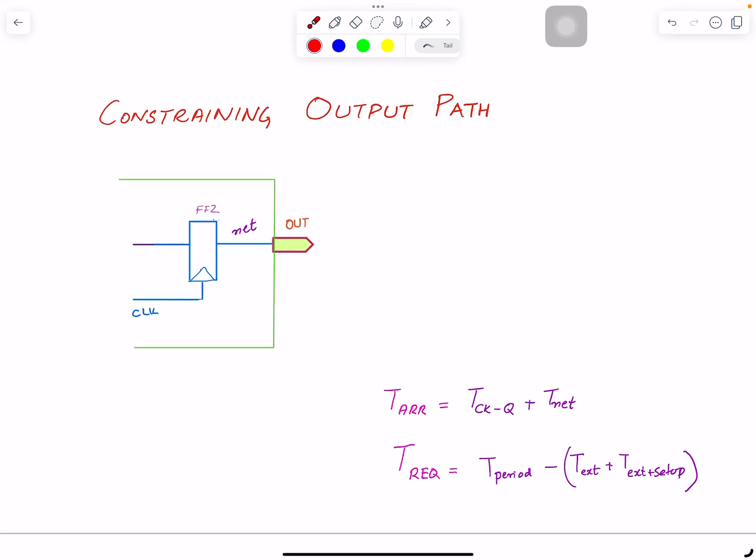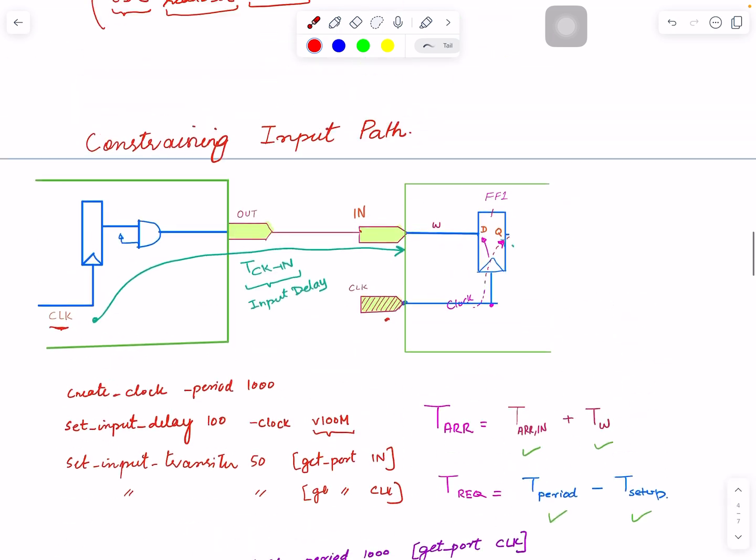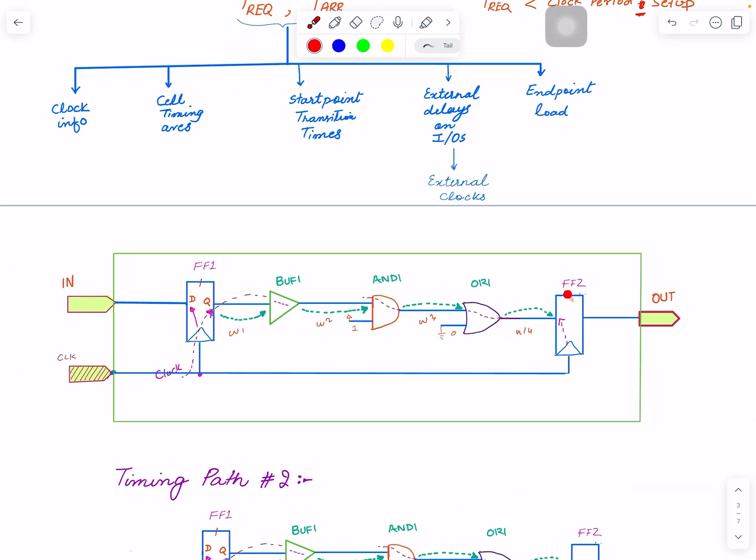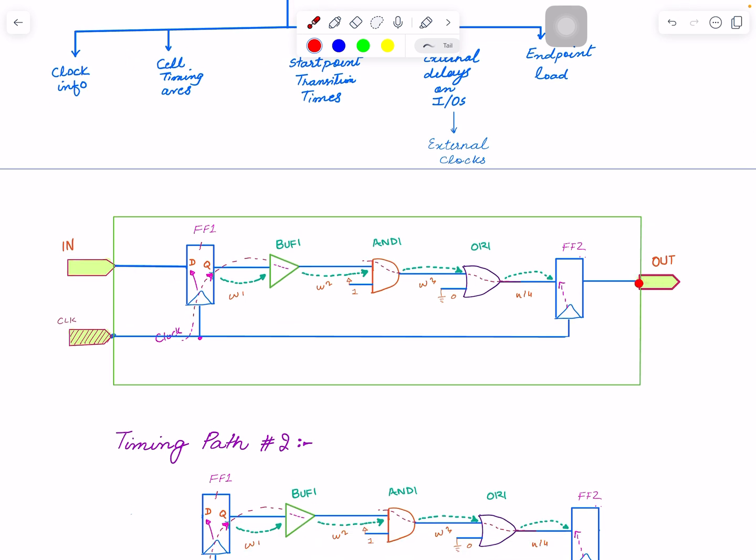In this video we will learn how to constrain an output path. This is the portion of the path we are interested in. If you want to look at the full path, we started with one video on flop to flop, then we had a video on the input side. Now we're looking into the third part. The endpoint is here and the launch point or start point is here.